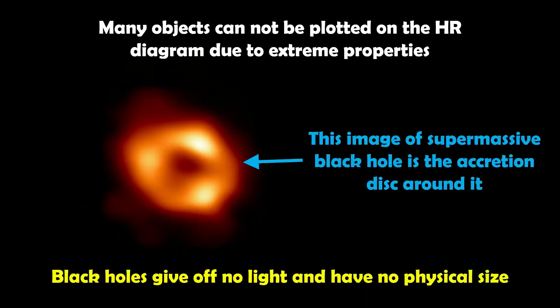And then finally, black holes are worth noting. We actually can't see black holes. What we can see is things like disks around them. So this is an image of a supermassive black hole, but it has an accretion disk around it which is falling onto the black hole. We can't see the black hole itself because it doesn't give off any light. So we can't plot that on the diagram anyway. And it doesn't really have a physical size, so to speak, apart from its event horizon and anything around it. So they don't fall on the HR diagram either.